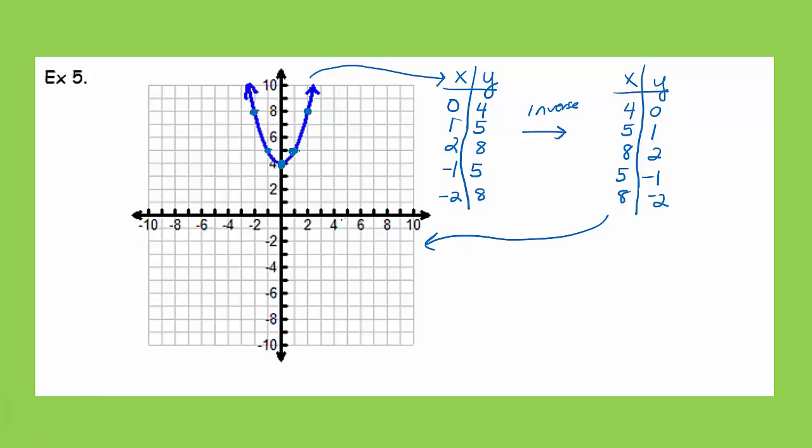So, my point, 4, 0 there, 5, 1, and 8, 2. 5, negative 1 is also a point, and 8, negative 2 is also a point.